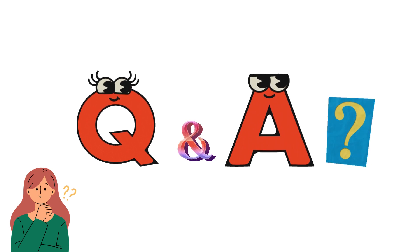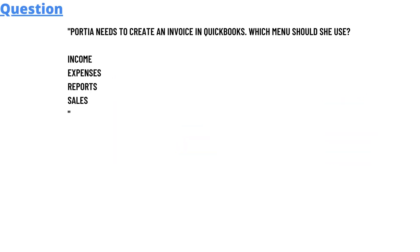Today's question: For Tier needs to create an invoice in QuickBooks — which menu should be used? Income, Expenses, Reports, or Sales?